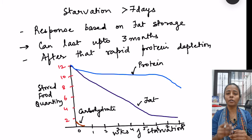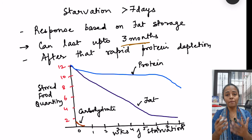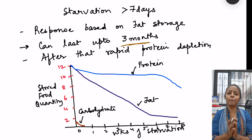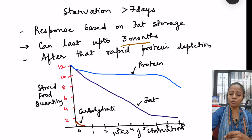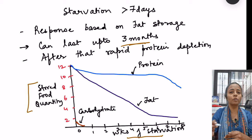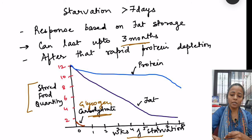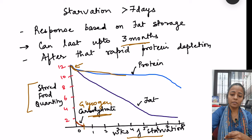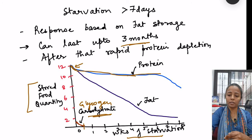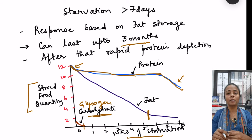After seven days of starvation, fat breakdown can continue as long as fat stores are present, which can last up to three months. After all fat storage is utilized, there will be rapid protein depletion, ultimately leading to death. This is represented in Guyton's graph, where the x-axis shows weeks of starvation and y-axis shows stored food quantity: glycogen is used first and depleted within 24 hours, then protein and fat break down together, protein later stabilizes, but once fat is exhausted, rapid protein breakdown leads to death.